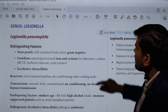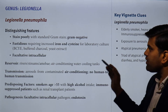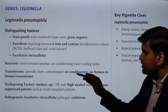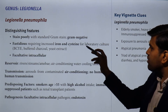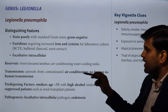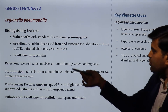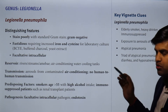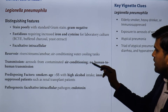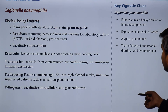From the Kaplan book: Legionella pneumophila stains poorly with gram stain — despite being gram-negative bacteria. A silver stain is needed. It is a fastidious organism requiring iron and cysteine, grown on buffered charcoal yeast extract (BCYE) medium. They are facultative intracellular organisms. Reservoir includes rivers, streams, and air conditioning water cooling tanks. Transmission is via aerosol from contaminated air conditioning. No human-to-human transmission.